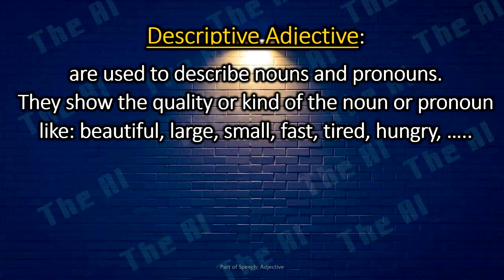Descriptive adjectives are used to describe nouns and pronouns. They show the quality or kind of the noun or pronoun, like beautiful, large, small, fast, tired, hungry, etc.